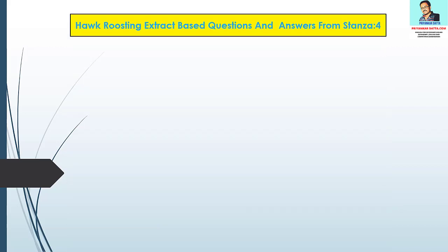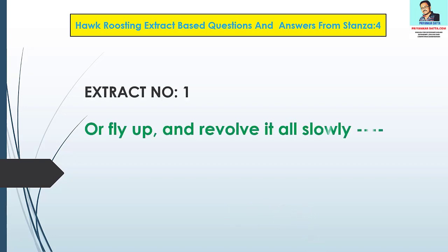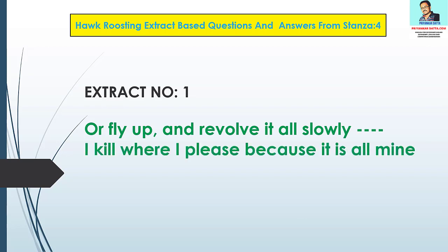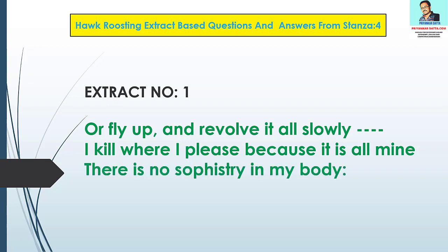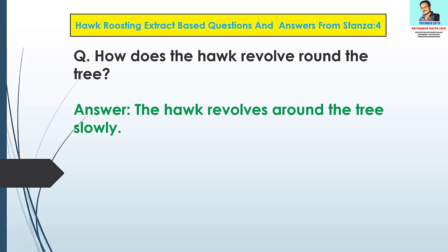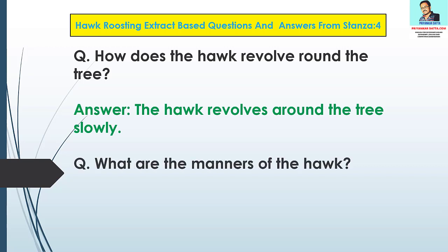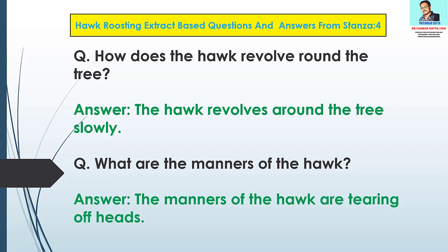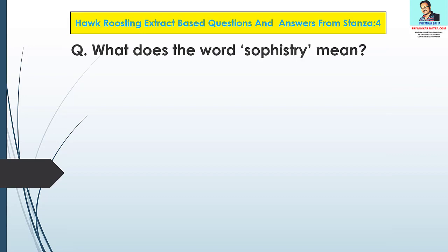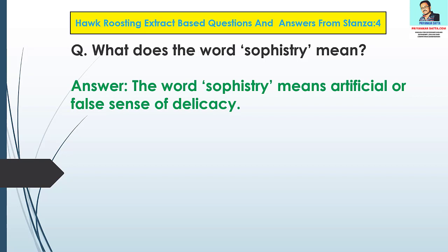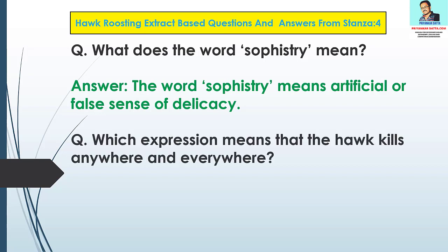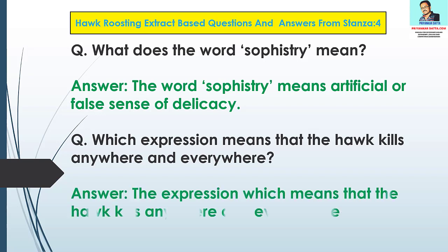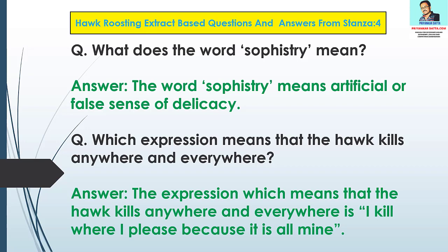Hawk Roosting extract based questions and answers from Stanza 4. Extract number one: 'I fly up and revolve it all slowly. I kill where I please because it is all mine. There is no sophistry in my body. My manners are tearing off heads.' Question 1: How does the hawk revolve around the tree? Answer: The hawk revolves around the tree slowly. Question 2: What are the manners of the hawk? Answer: The manners of the hawk are tearing off heads. Question 3: What does the word sophistry mean? Answer: The word sophistry means artificial or false sense of delicacy. Question 4: Which expression means that the hawk kills anywhere and everywhere? Answer: The expression is 'I kill where I please because it is all mine.'